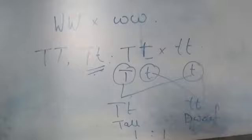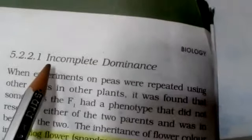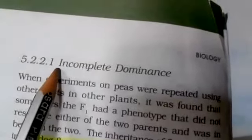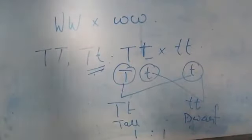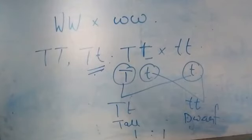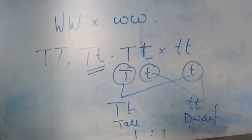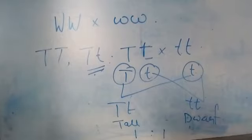So, next we have to study about incomplete dominance. Incomplete dominance is a phenomenon where the dominant allele is not able to suppress the recessive allele completely, so they are not fully suppressing the recessive allele's expression.